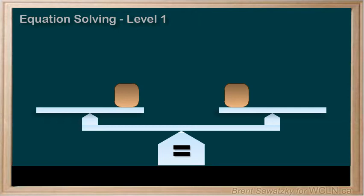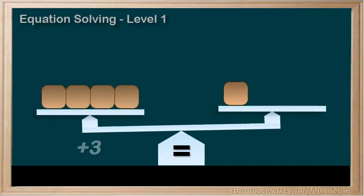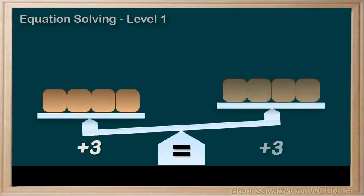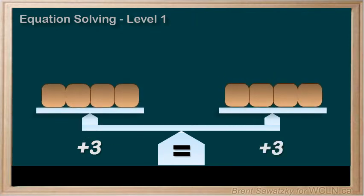Consider what could you do to both sides of this scale if the only rule you needed to follow is that the scale stays balanced, or equal. If I add three to the left, what would I do to the right? To keep it balanced I'd have to add three to the right, and there, it's back to equal.